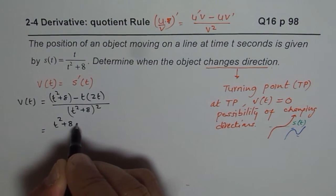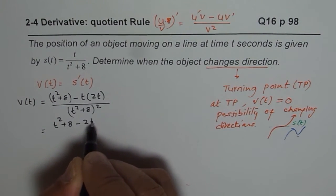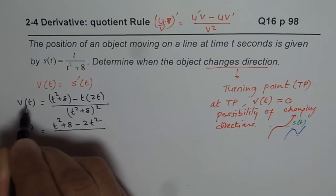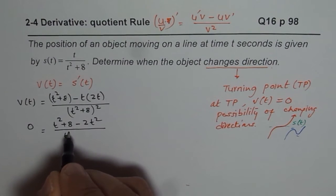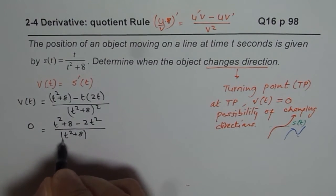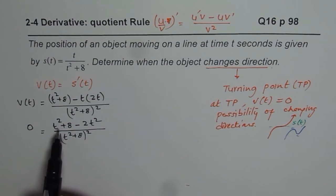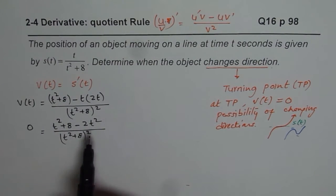Let us solve for this, t squared plus 8 minus 2t squared. And we will equate this to 0 to find time when the velocity is 0. So, t squared plus 8 whole square. Now, denominator is always positive. So, for 0 velocity, numerator should be 0.